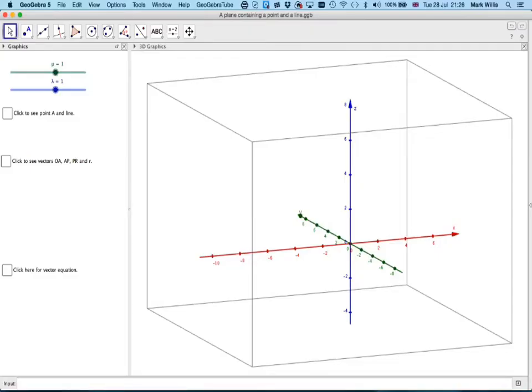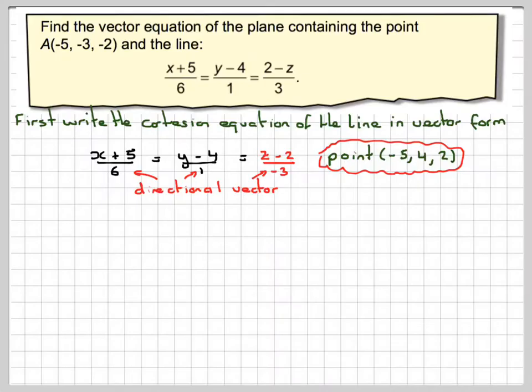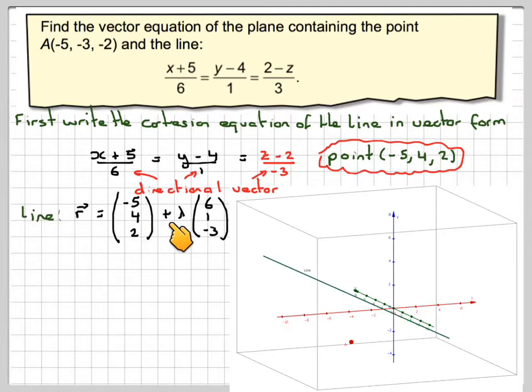Here we have the axis. We have here a point, here is the point, and here is the line. The line will be of the form minus 5, 4, 2 plus lambda 6, 1, minus 3. Here is my point and here is my line. The point is going to be at minus 5, minus 3, minus 2.